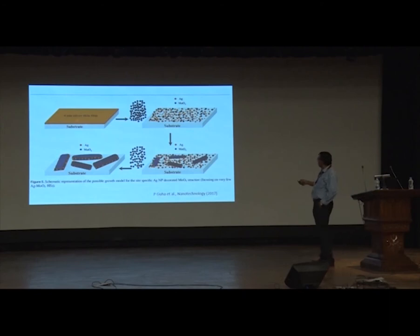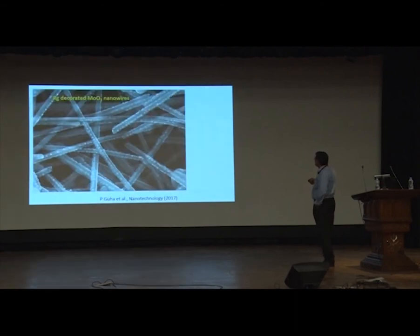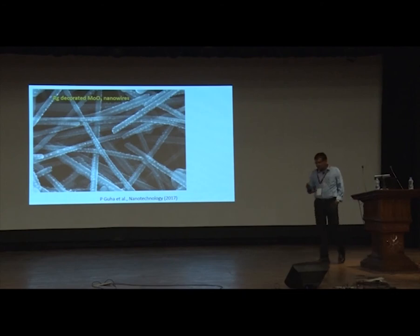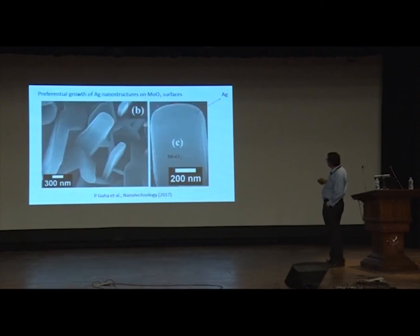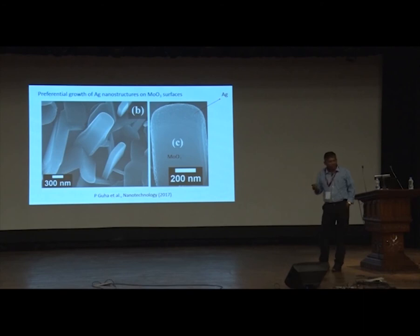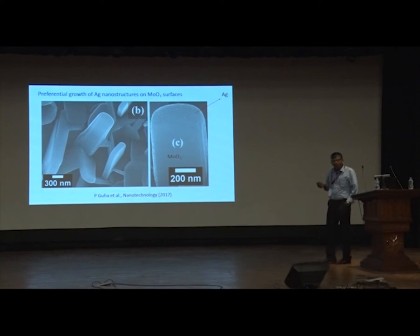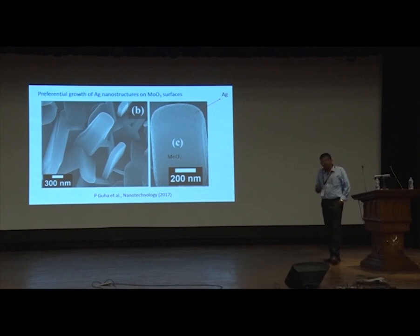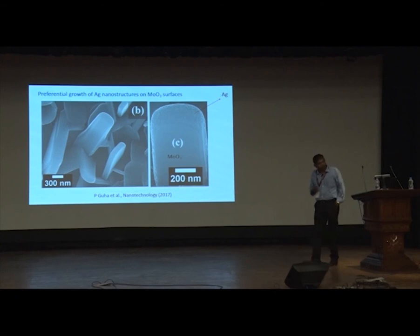Similarly, we have a silver film on a substrate and observe that molybdenum trioxide nanowires or nanoplates get decorated with silver. Interestingly, the silver deposits only on particular surfaces — the zero surface — and we have done DFT calculations to show which surface is energetically favorable. These are plasmonic particles with many applications, and simple SEM pictures give you a lot of information on orientation and structure.